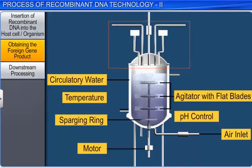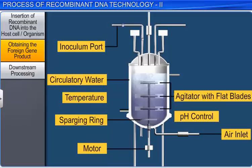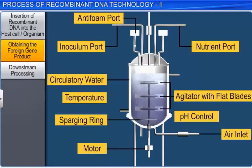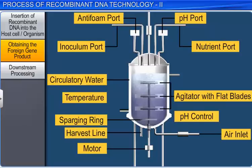For example, the inoculation port is used to introduce initial inoculums, and the nutrient port to introduce more nutrients. Similarly, the anti-foam port is used to introduce anti-foaming agents, while the pH port is used to introduce acids or alkalis to maintain optimal pH. At the base of the tank, there is a harvest line to extract the culture medium and microbial products.